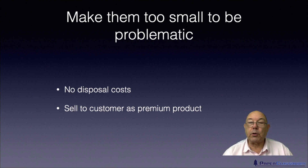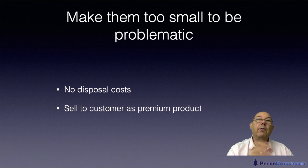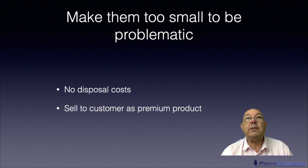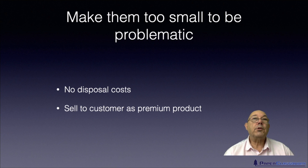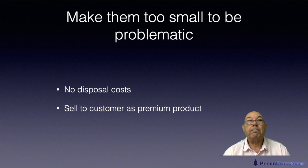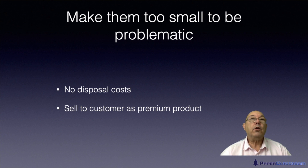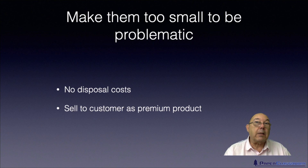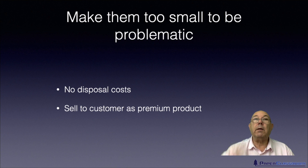They all go out with the sheet — effectively it's product — so you have no disposal costs. You don't have to pay anyone to take it off site. And those stickies you're actually selling to the customer at the same price as the product. If you're selling paper at £700 a ton, you can either pay somebody to take away a ton of stickies, or in tiny little particles you can send them out with the product and the customer has just paid you £700 for all your stickies.